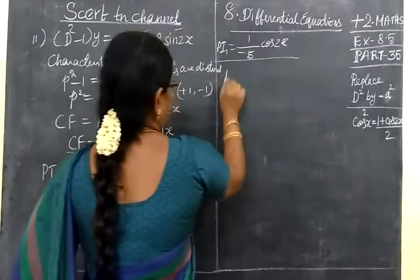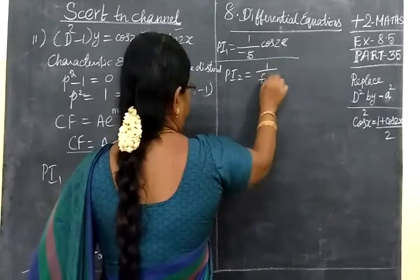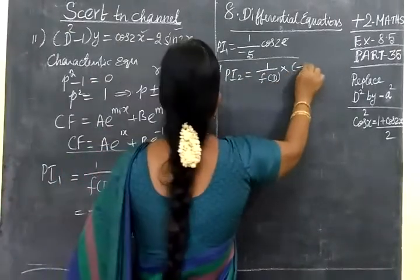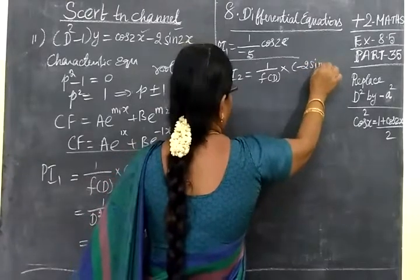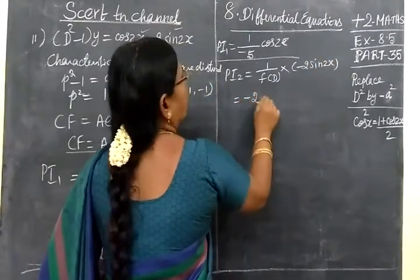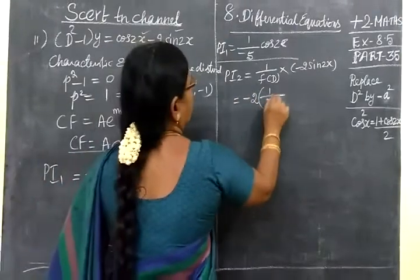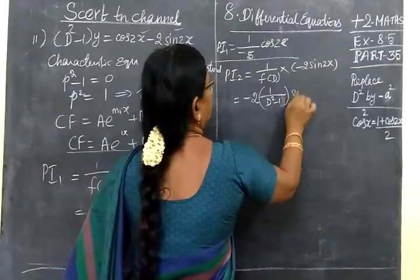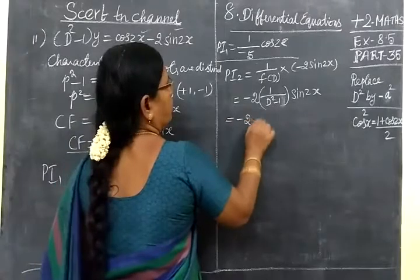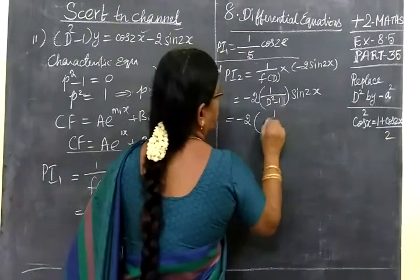PI2: in the same way, 1/f(D) × (-sin2x). Taking -2 outside: -2 × 1/(D² - 1) × sin2x. Replacing D² by -4.